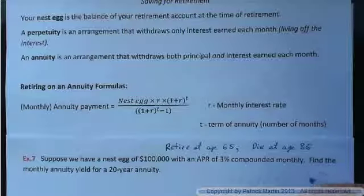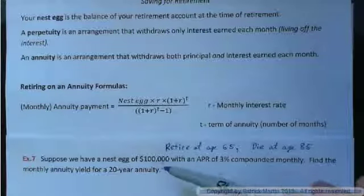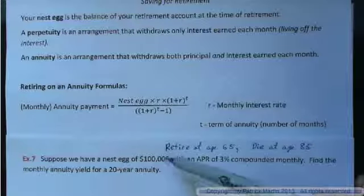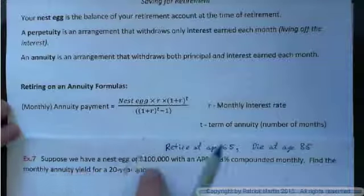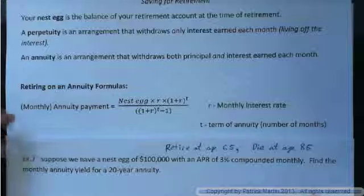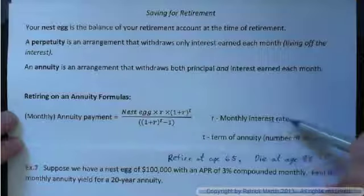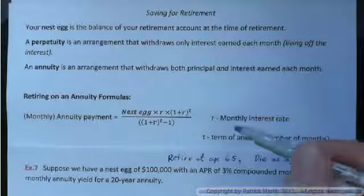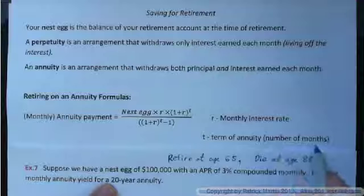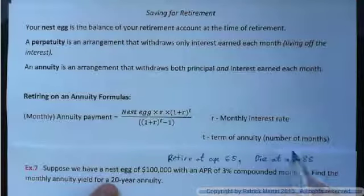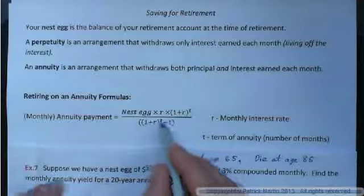Thank goodness for social security, because if you don't save up a big enough nest egg or if you live too long, you might be out of luck under a scheme like this. The formula for monthly annuity payment is: nest egg times R, where R is the monthly interest rate, times (1 + R) to the power of T, all over (1 + R) to the power of T minus 1. T is the term of the annuity in number of months, so we must multiply years by 12.